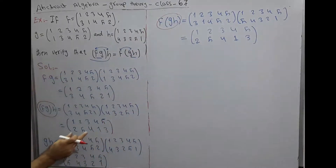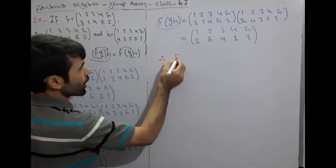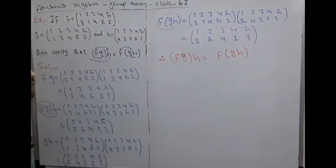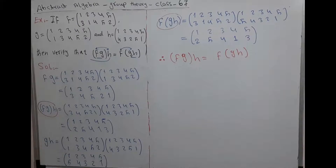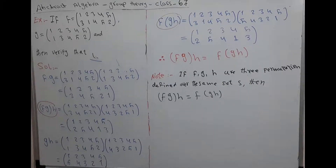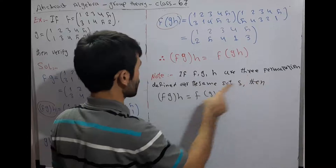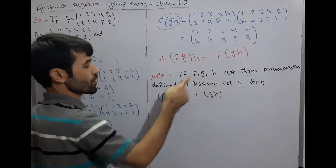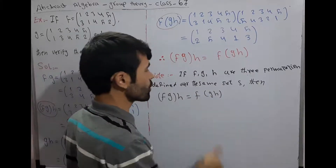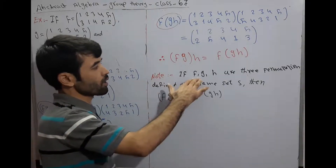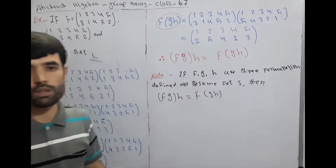Comparing these two values, (f∘g)∘h and f∘(g∘h) are equal. Therefore f∘(g∘h) = (f∘g)∘h. This shows that multiplication of permutation groups satisfies the associative law. We can say: if F, G, H are three permutations defined over the same set S, then this relation holds — F∘G∘H = F∘(G∘H) — whenever F, G, H are three permutations on the same set S.